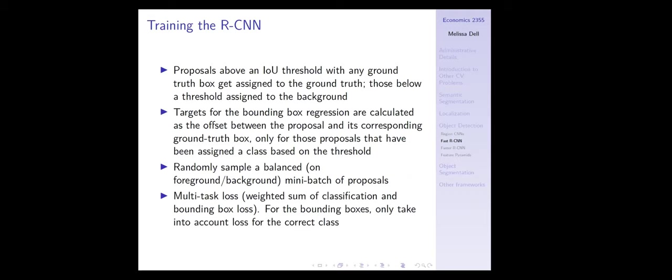How do we actually train this? We need to know what's an object and what's background. The way this is done is with an intersection over union threshold — any ground truth box above that threshold gets assigned as that object, while if it's below the threshold it's assigned as background. The targets for bounding box regression are just the offset between the proposal and the corresponding ground truth box. This is only calculated if there's actually an object — if it's classified as background, there's no object in that crop to detect.